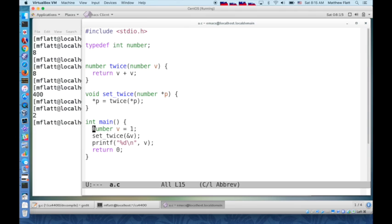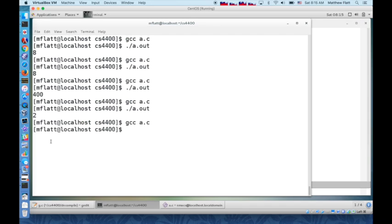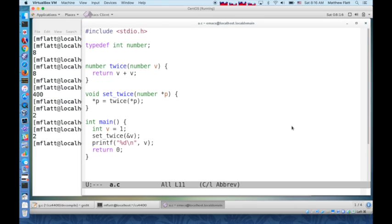Now it doesn't matter whether we call number or int to be the type of v. The compiler is going to be happy either way because those two types are completely equivalent. So C doesn't really give you that kind of abstraction behind a type name. If you want to hide the representation, it just says that int and number are equivalent.